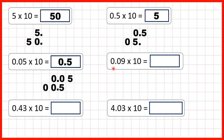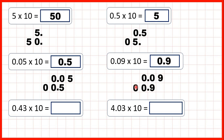So what is 0.09 times 10? We write the number out and copy down the decimal point. The 0 in our tens place we can ignore.